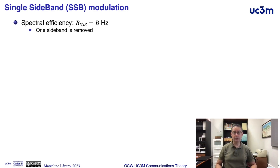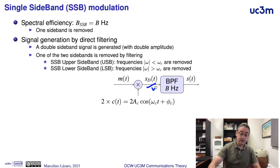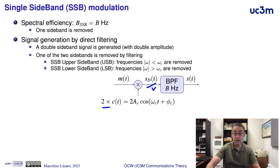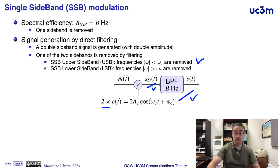The simplest way to obtain a single sideband modulation is by means of direct filtering. First, a double sideband modulation is generated by multiplying the modulating signal with a carrier, usually with twice the amplitude that we have in a conventional double sideband modulation, and then one of the two sidebands is removed by means of a band pass filter. If the frequencies removed are below the carrier frequency, we have the upper sideband variant, and if the frequencies removed are above the carrier frequency, we have the lower sideband variant.